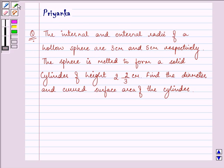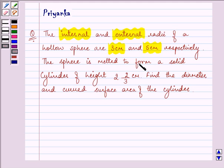The question says the internal and external radii of a hollow sphere are 3 cm and 5 cm respectively. The sphere is melted to form a solid cylinder of height 2 and 2/3 cm. Find the diameter and curved surface area of the cylinder.